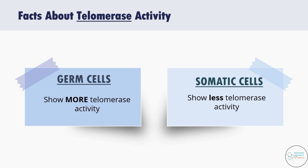In somatic cells, however, as cells divide repeatedly, after a point there is not enough telomerase enzyme available, so the telomeres grow shorter, the cells age, and this results in aging, age-related diseases, and death.